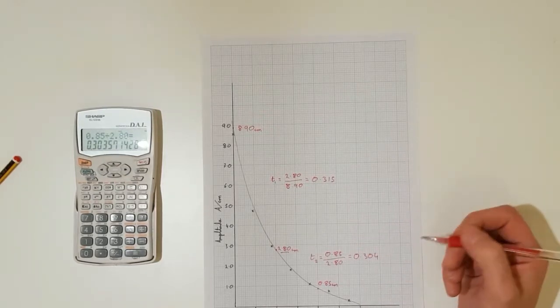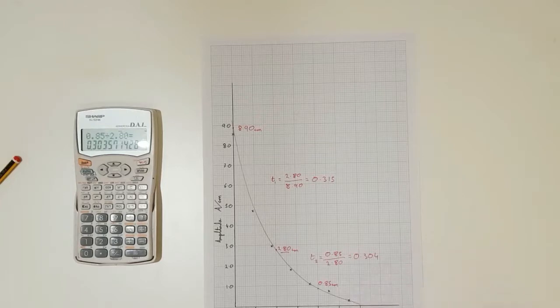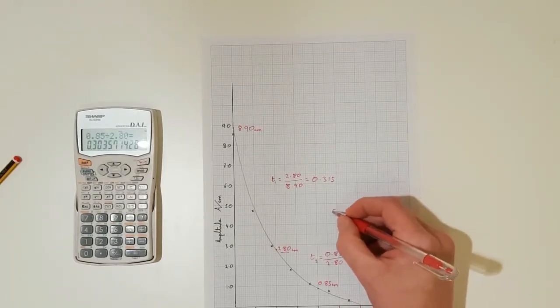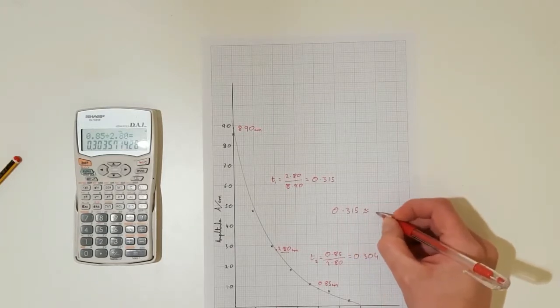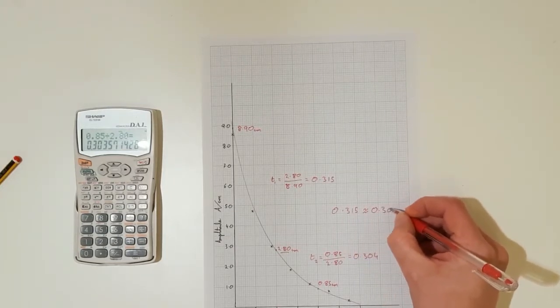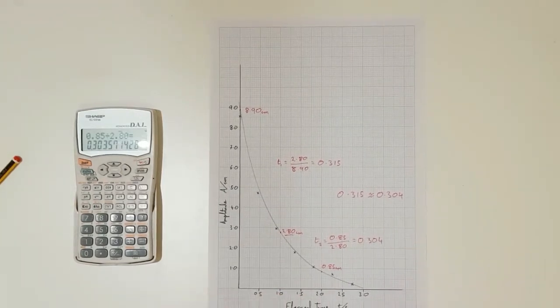These two numbers are quite similar. If we had decay going on for longer, we could compare a third interval, but my graph peters out a little bit there. But we can say that 0.315 is approximately equal to 0.304, so we would say that this decay is exponential.